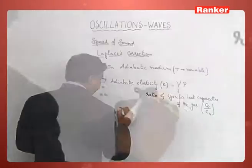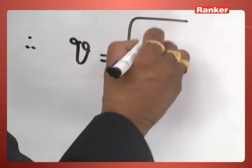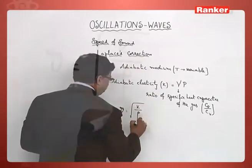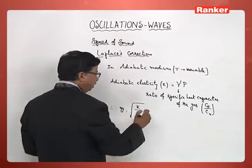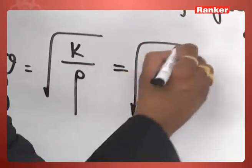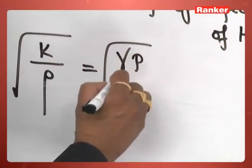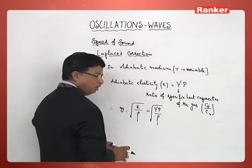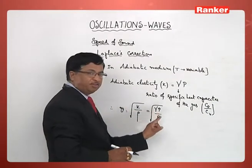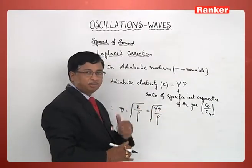Therefore, speed of sound, which can be written as root K by rho according to Newton's formula, now should be written as root gamma P by rho. Simple correction: in place of P, he took gamma P.